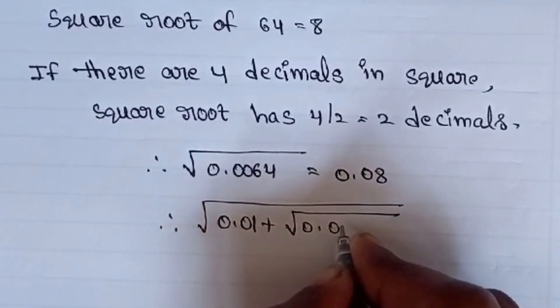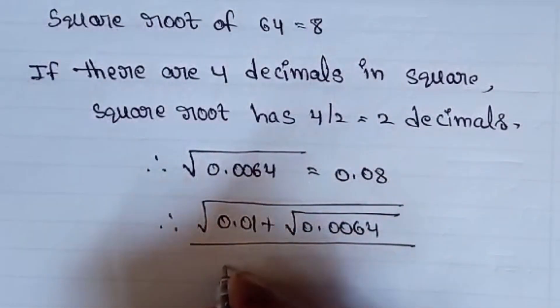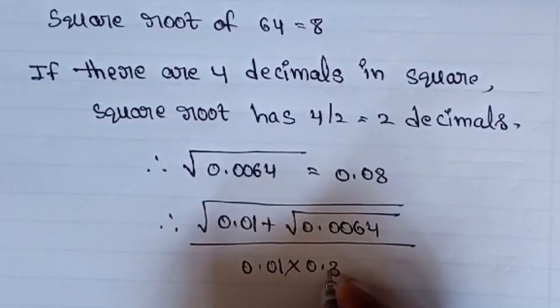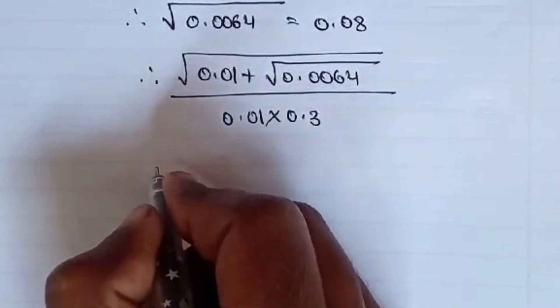So we know that square root of 0.0064 is nothing but 0.08. If we substitute the value we'll get the required result we are looking for.